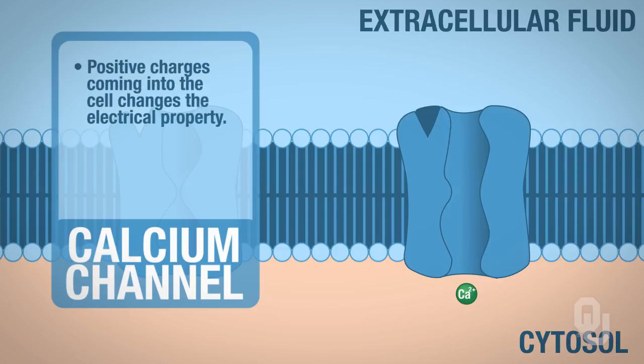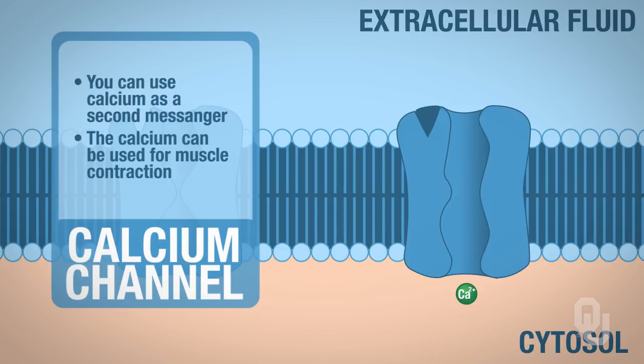Since there are positive charges coming into the cell, that changes the electrical property, right? The intracellular fluid is more positive. The calcium that's moving into the intracellular fluid can be used for muscle contraction. It can cause secretion. You can also use calcium as a second messenger, which we'll talk about later.